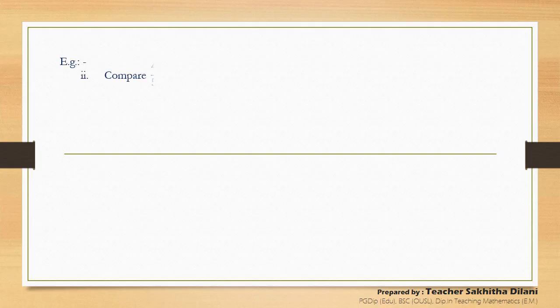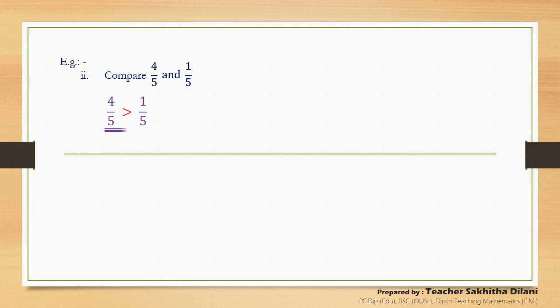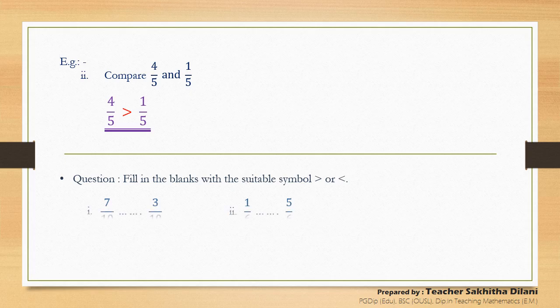Let's see another example — compare four-fifths and one-fifth. In these two fractions the denominators are the same. Therefore, the larger fraction is the fraction with the larger numerator. That is four-fifths. So it can be written as: four-fifths is larger than one-fifth. Now you are given a question: fill in the blanks with the suitable symbol, greater than or less than.